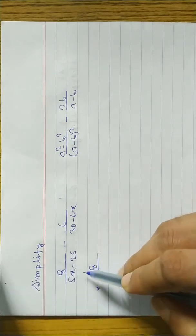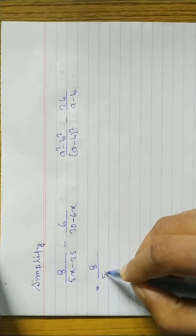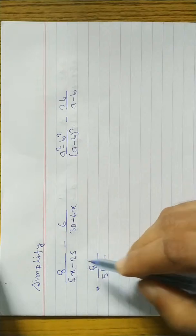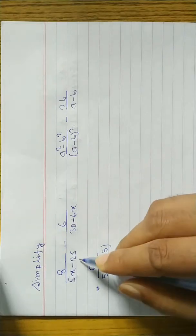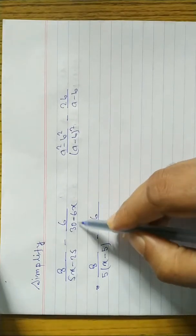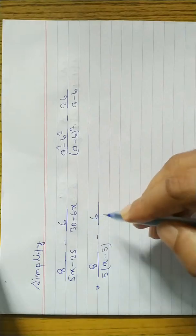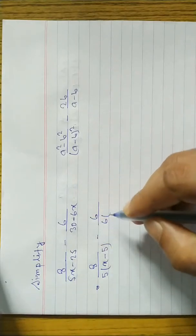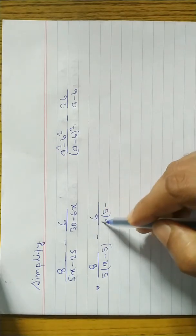First, we have to take common factors. In the first denominator, 5x minus 25, we can take 5 as common, leaving x minus 5, since 5 times 5 is 25. In the second denominator, 30 minus 6x, the common factor is 6, since 6 times 5 is 30, and 6 is already common, leaving x.